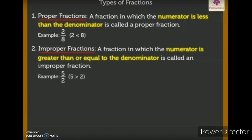For example, five by two — here five is greater than two, so the numerator is greater than the denominator, making it an improper fraction. Also, four by four — here the numerator is equal to the denominator, so it is also an improper fraction.